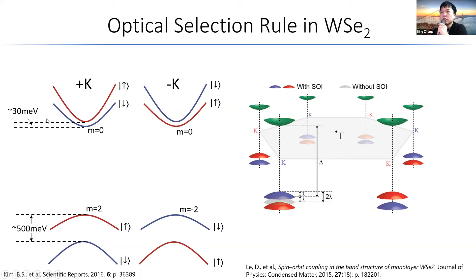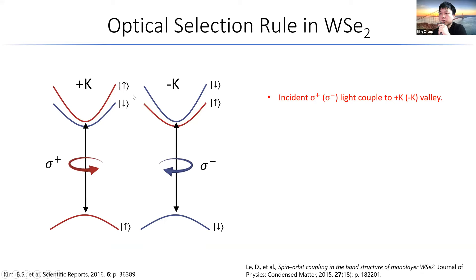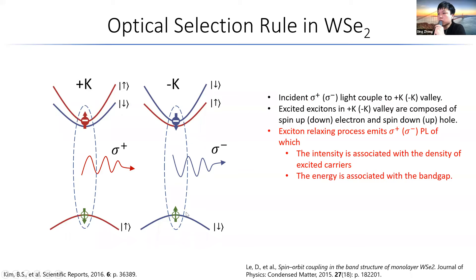Here is a schematic of the band structure. The spin-orbit coupling for the valence band is really large so we can render the lower level invisible. We can excite the plus K valley and minus K valley respectively with sigma-plus light and sigma-minus light. When they're excited, we have excitons in the plus K valley composed of a spin-up electron and a spin-down hole. In the minus K valley we have spin-down electron and spin-up hole. When these excitons relax, they emit sigma-plus and sigma-minus photoluminescence accordingly, and the energy reflects the optical band gap size of this material.